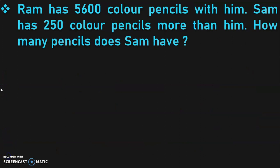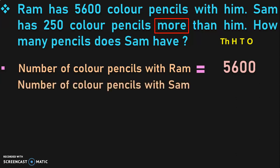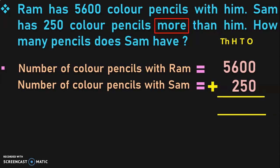Let us do another example. Ram has 5,600 color pencils with him. Sam has 250 color pencils more than him. How many pencils does Sam have? The keyword is 'more'. Write down the statements: number of color pencils with Ram is equal to 5,600. Write down the place values because we have numbers of different digit lengths. Number of color pencils with Sam is equal to 250. Sam has 250 pencils more than Ram, so we perform the addition operation. Begin the addition from the ones place.